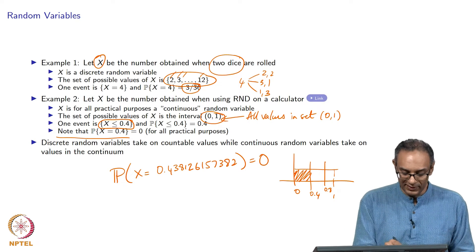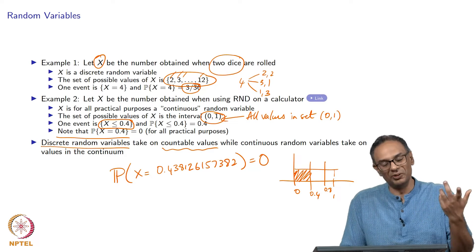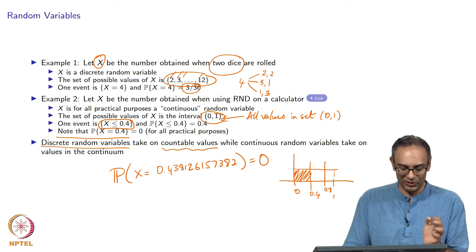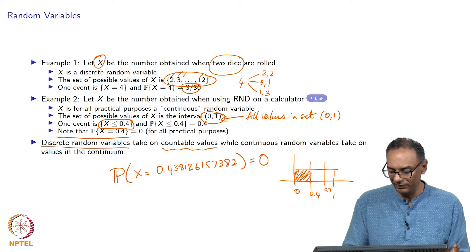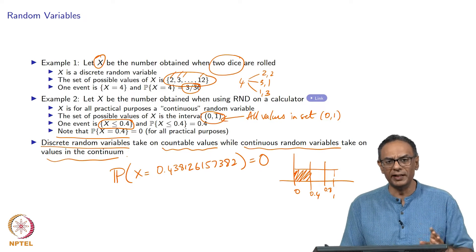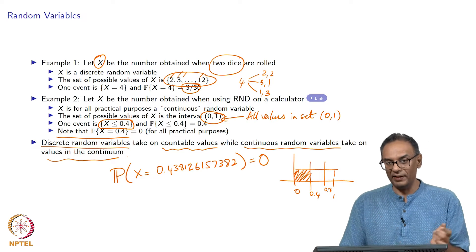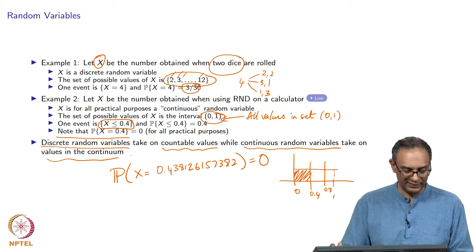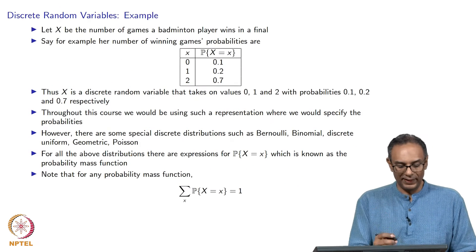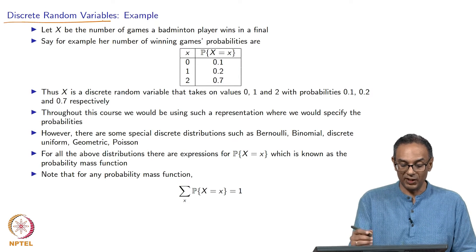In summary, a discrete random variable is one that takes countable values — you can count them. It does not have to be a number; it could be red, blue, green, but usually it is a numerical value. The continuous random variable takes on values in the continuum, usually from 0 to infinity, sometimes negative infinity to infinity, and sometimes a finite range from 0 to 1. The first topic we will cover is discrete random variables, and till the end of this lecture we will basically be talking about discrete random variables.